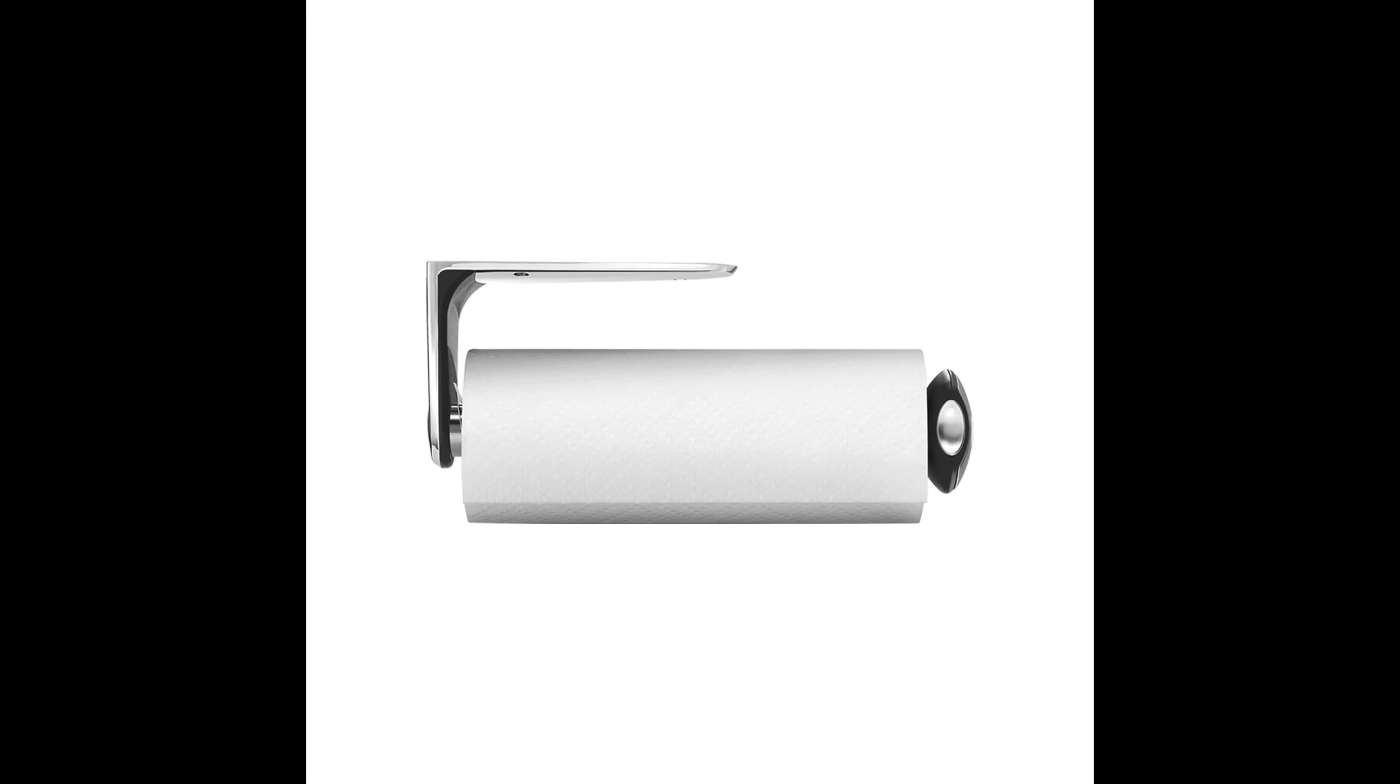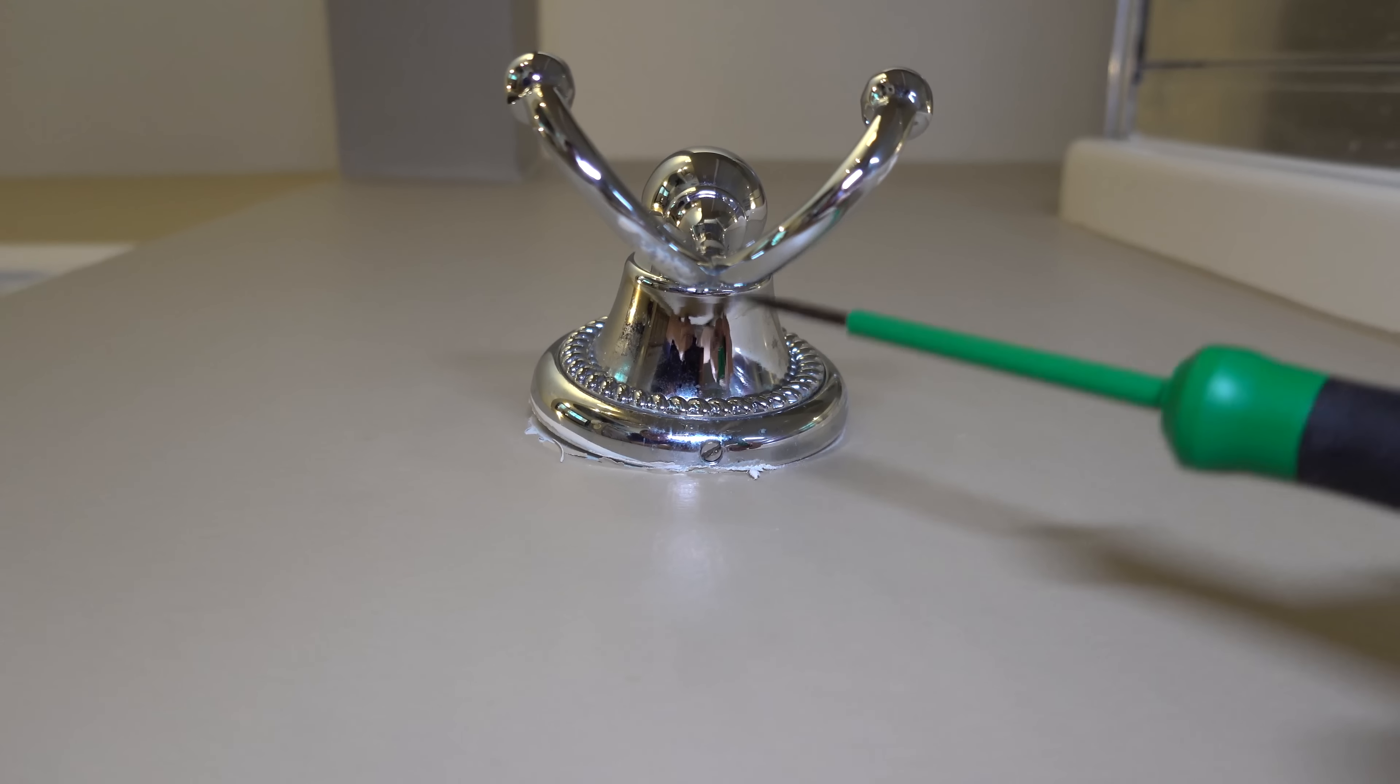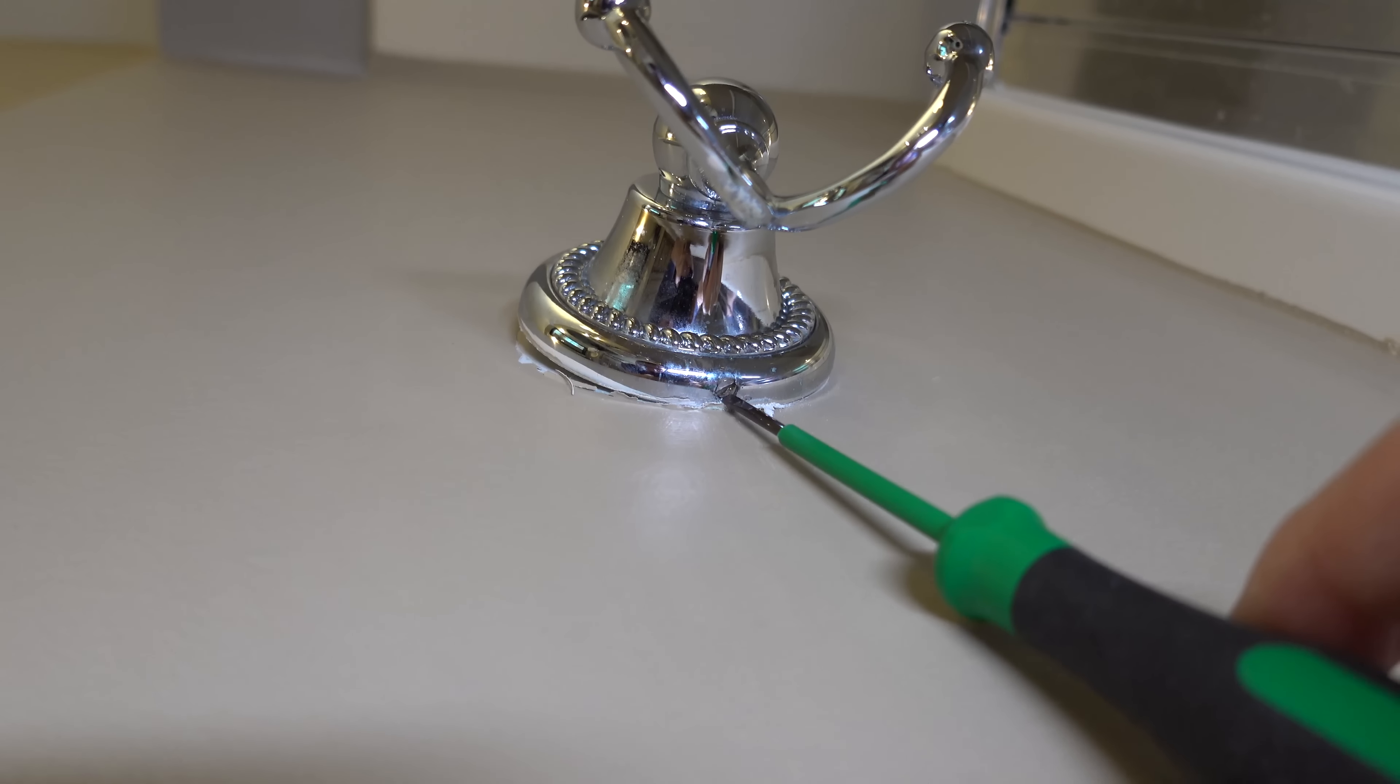Now this could be a paper towel holder, toilet paper mount, or any kind of bracket that screws into your wall. In this example we're going to be fixing this bathroom towel hook.